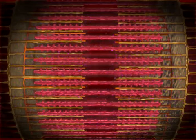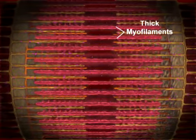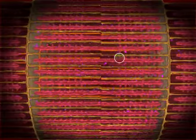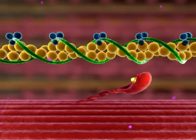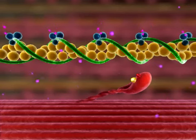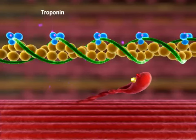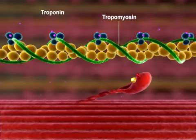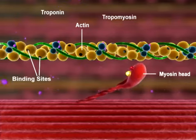A sarcomere shortens when myosin heads in thick myofilaments form crossbridges with actin molecules in thin myofilaments. The formation of a crossbridge is initiated when calcium ions, released from the sarcoplasmic reticulum, bind to troponin. This binding causes troponin to change shape, and tropomyosin moves away from the myosin binding sites on actin, allowing the myosin head to bind actin and form a crossbridge.